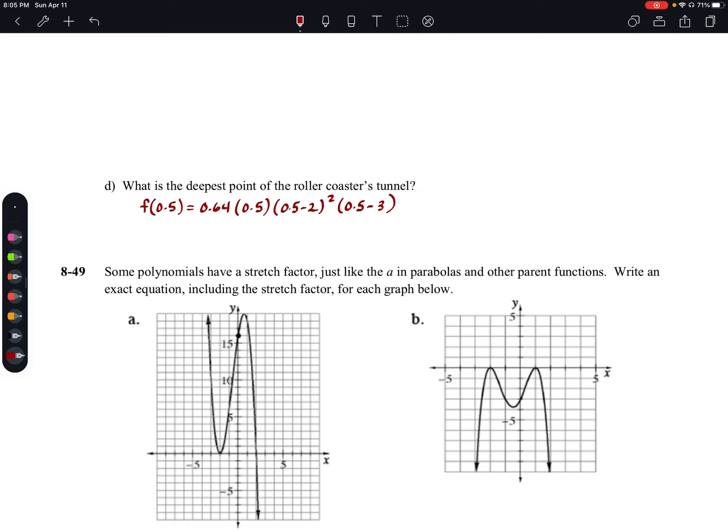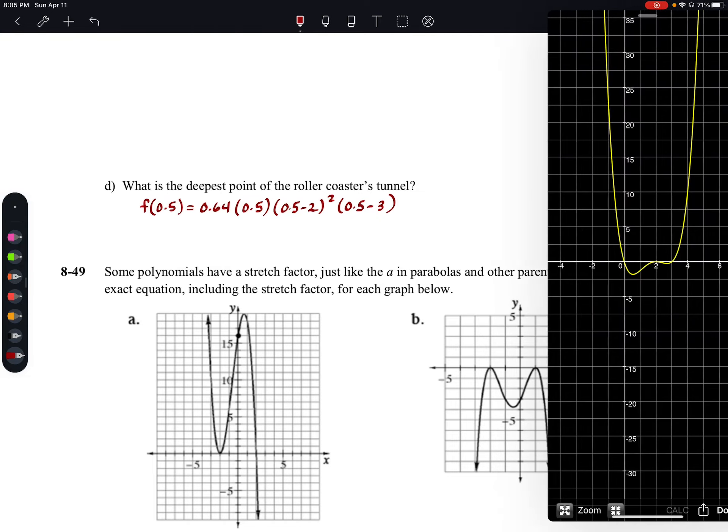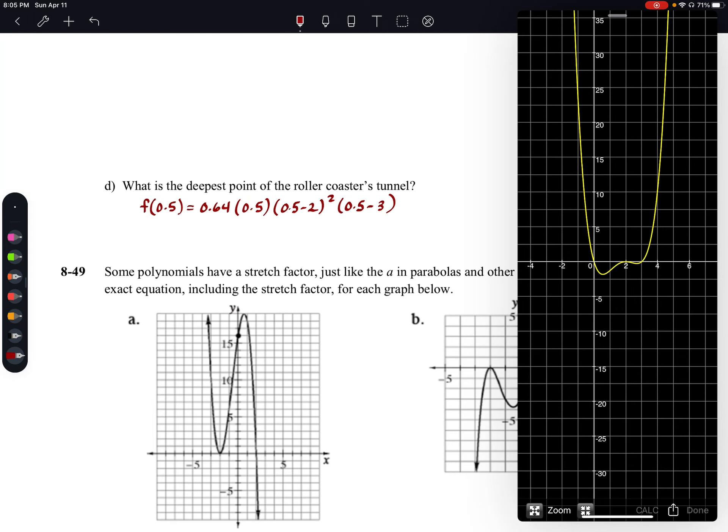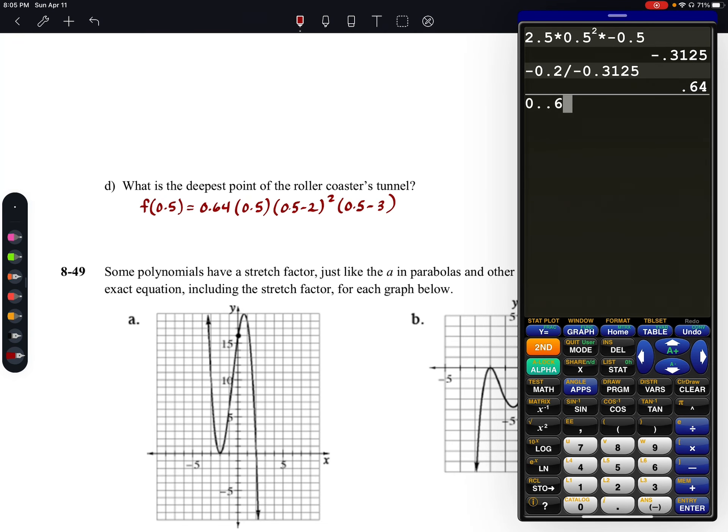Then all we need to do is take that and plug it in, figure out what that would be. You can probably even use your table on your calculator if you want to, or if you don't have it on there, just go ahead and type it in. 0.64 times 0.5 times (0.5 - 2), we'll just go ahead and just type it in there. That should be squared. Make sure you don't screw that up like I just did. There we go. And then we have times our (0.5 - 3).